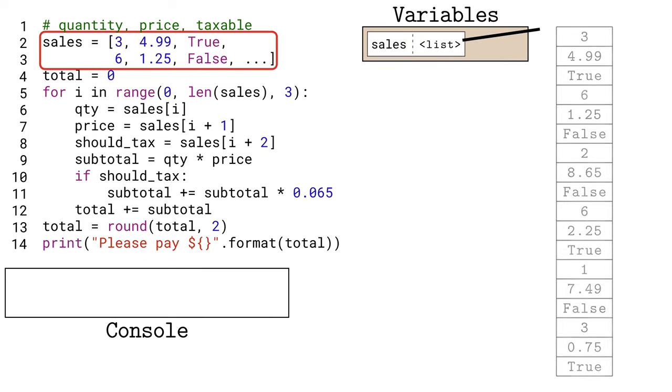Perhaps this is the way the data is returned from our inventory database. This list, stored in the sales variable, could represent any number of items sold in a transaction. In this example, there are 18 elements in the list, corresponding to six distinct items.